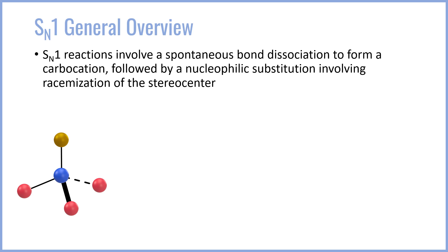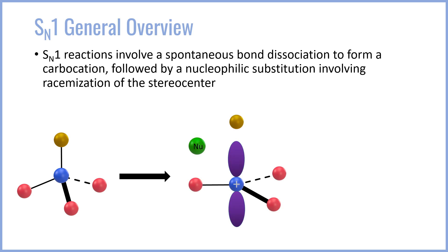Both electrons will go with the leaving group to create an anion, and the carbon will remain electron deficient with a positive charge. That will look like this, where the purple dumbbell-looking shape is the p-orbital, the empty p-orbital, that results when a cation is formed.